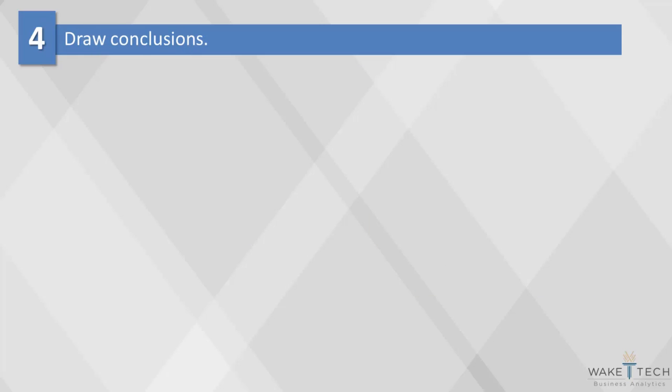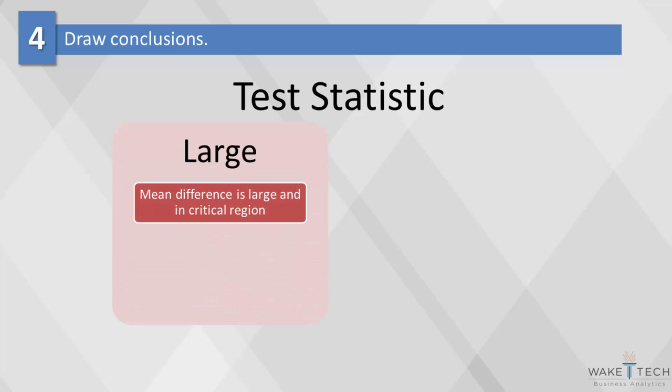The final step is drawing conclusions. Once we've computed the z-value of our test statistic, we have to look at the corresponding probability values to find out if it's reasonably close to the population mean. A large value shows that the obtained mean difference is large and in the critical region. The difference is significant, which means we have to reject the null hypothesis that the weights have not changed over time.